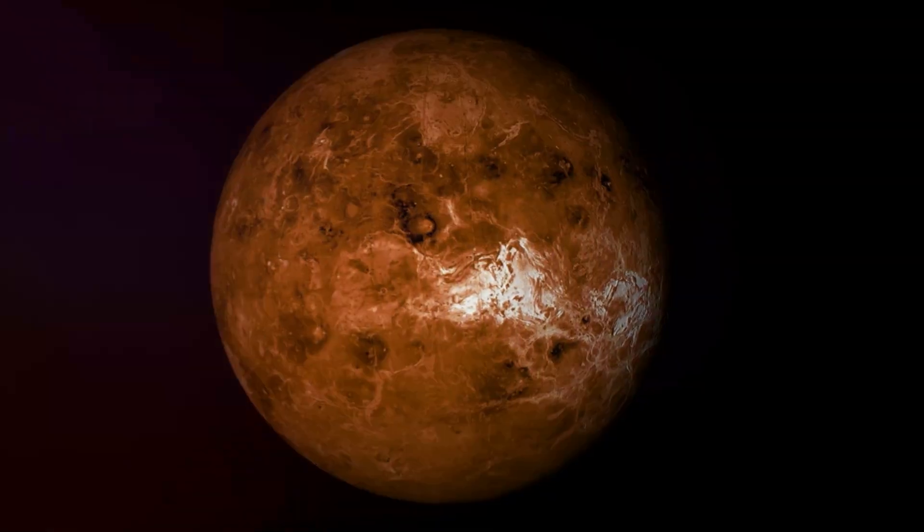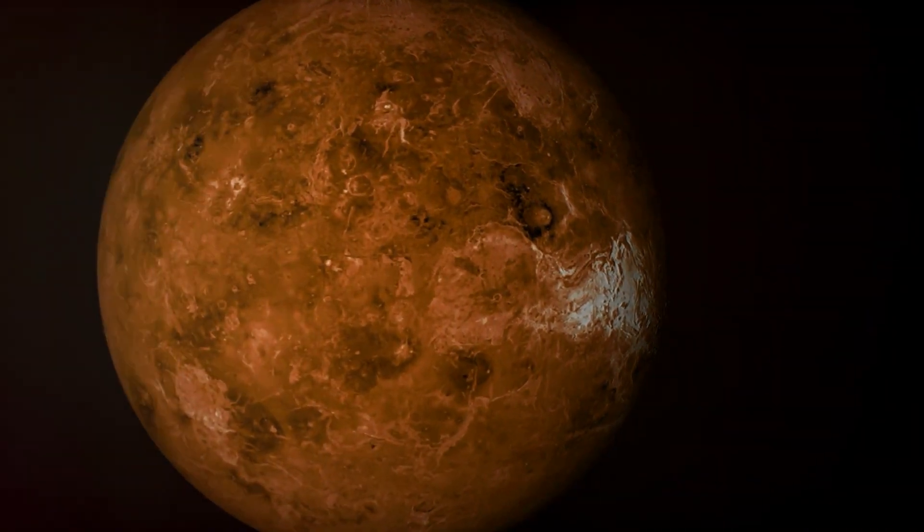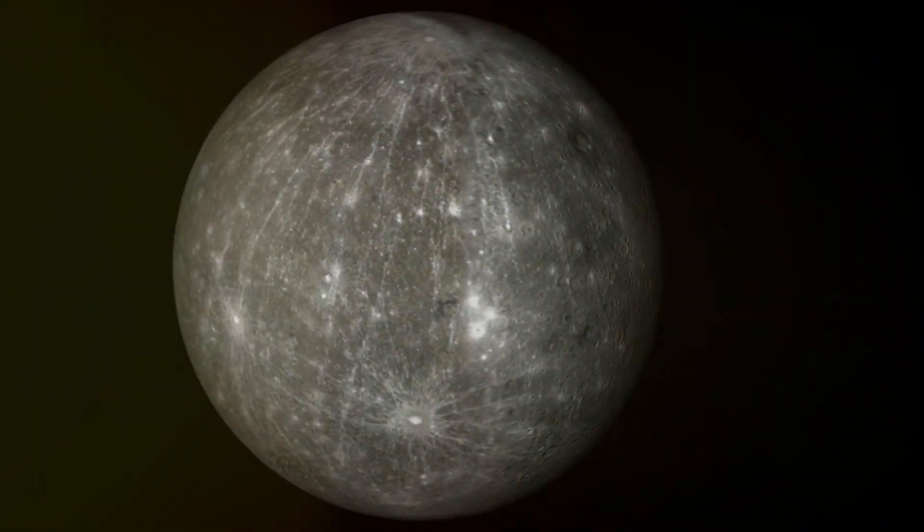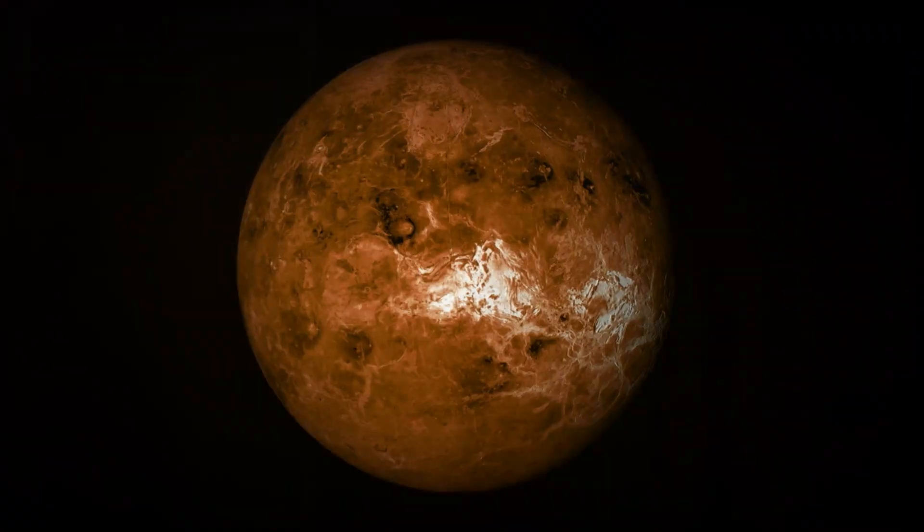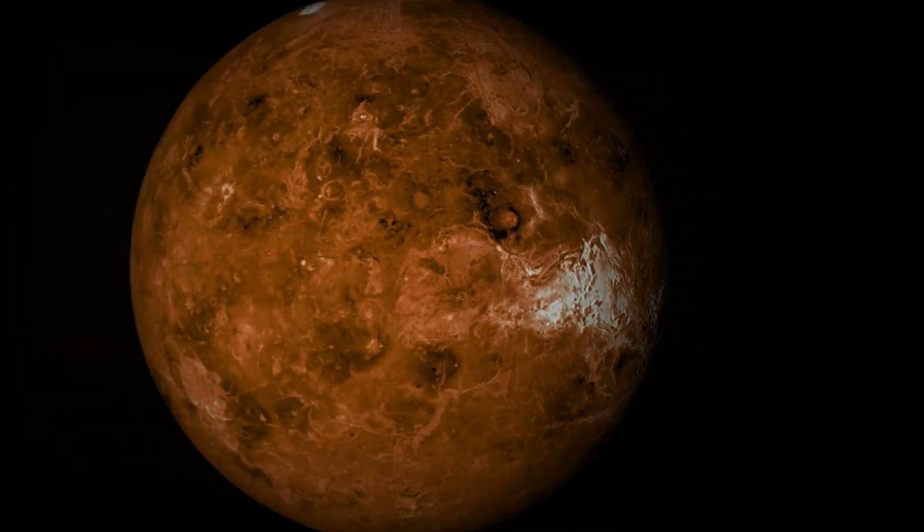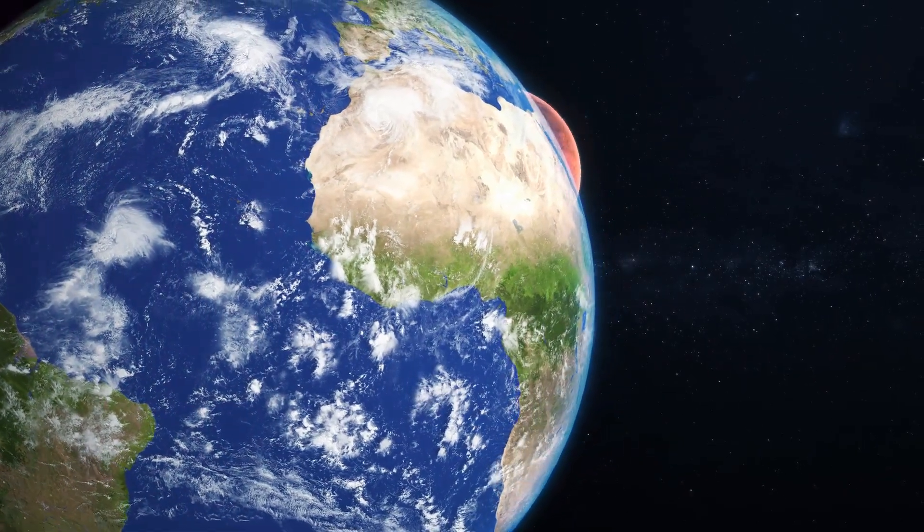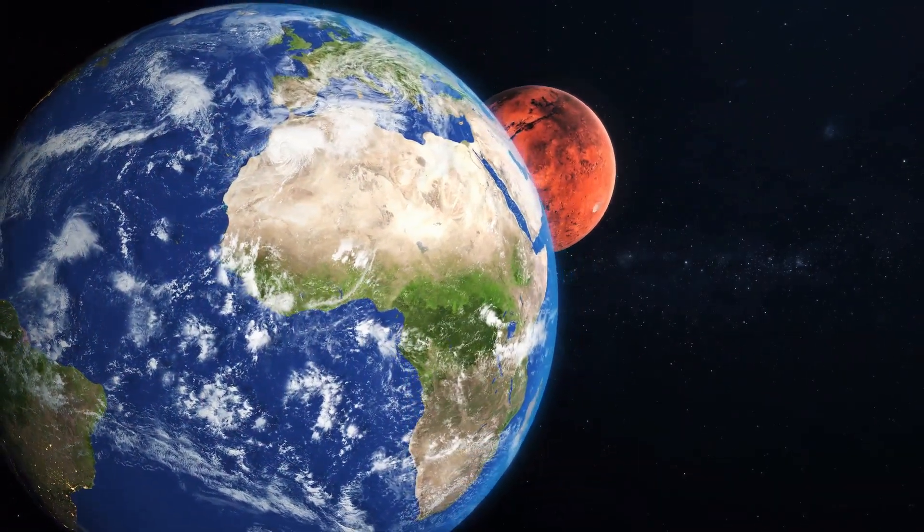Our journey begins with the inner planets, the rocky quartet of Mercury, Venus, Earth, and Mars. These are the terrestrial planets, each with its own unique characteristics. Mercury, the smallest planet in our system, orbits closest to the Sun. Venus, our nearest neighbor, is shrouded in thick, toxic clouds. Earth, our lush and life-sustaining home, is the only planet known to harbor life. And Mars, the red planet, holds promise for future human exploration.